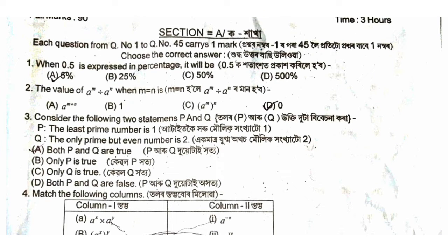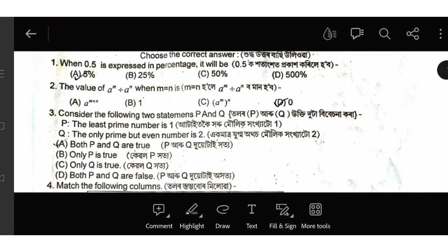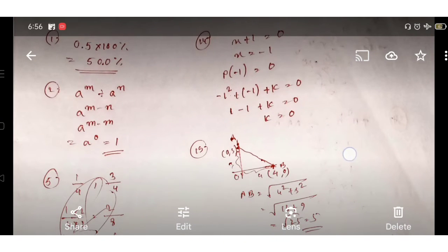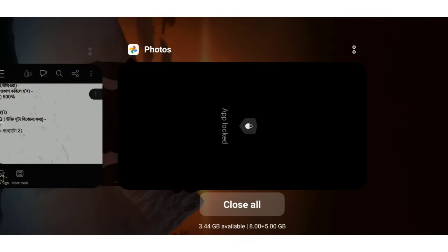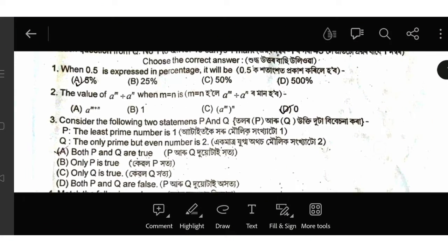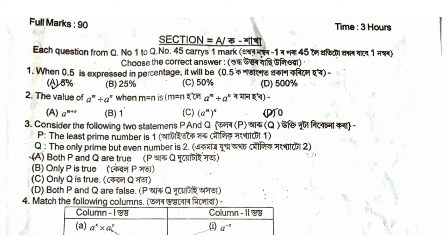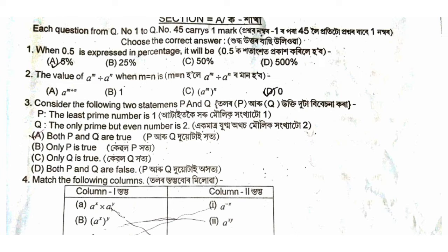The second question: the value of a to the power m divided by a to the power n, when m is equal to n. The value of a^m divided by a^n is equal to a^(m-n), and when m equals n, the result equals a^0, which equals 1. The answer for option C2.